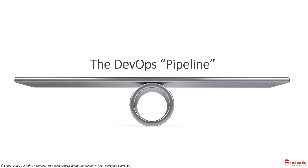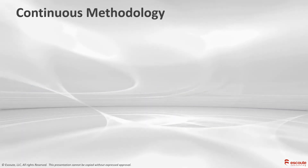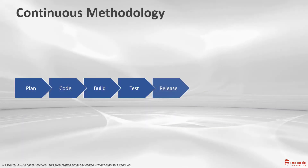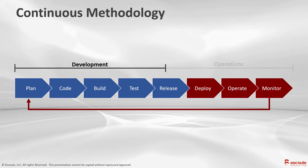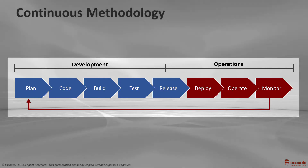Now let's get into the meat of how we deliver, and that's what we call the DevOps pipeline. DevOps unifies the application delivery process into a continuous flow, incorporating the steps that you see right here, with the goal of delivering applications more quickly and easily.